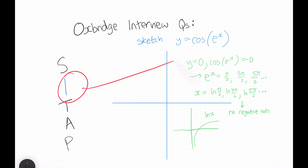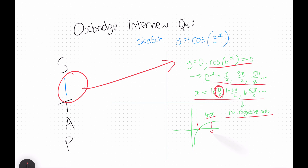Looking at intersections, when y is 0, cos(e^x) must be 0, so e^x must equal pi over 2, 3 pi over 2, 5 pi over 2, and so on. Taking ln of both sides gives us the x values. From the graph of ln x, we can see that pi over 2 lies to the right of 1, giving a positive solution, so there are no negative roots.